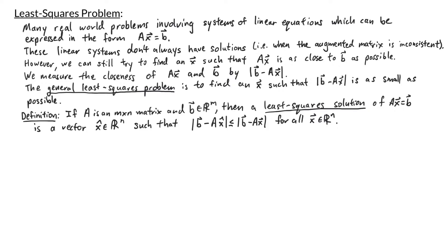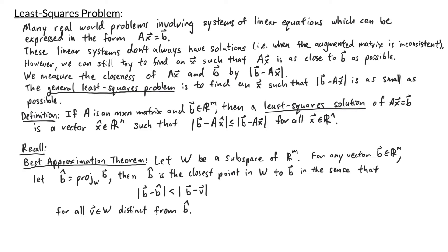Before we talk about how to find a least squares solution to the linear system A times x equals B, I want to recall a theorem we've proved previously. In the best approximation theorem, let W be a subspace of Rᵐ. For any vector B in Rᵐ, let B̂ be the projection of B onto W. Then B̂ is the closest point in W to B, in the sense that the magnitude of B minus B̂ is less than the magnitude of B minus V for all V in W different from B̂.